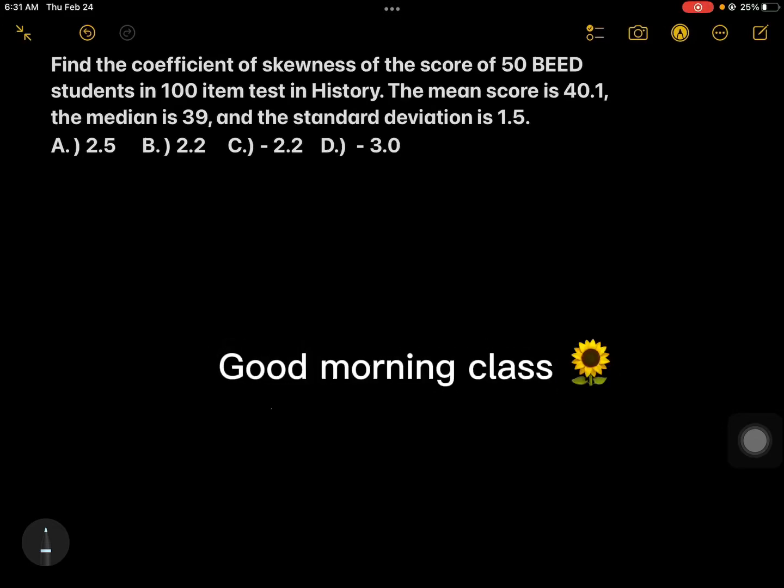Find the coefficient of skewness of the score of the 50 BEED students in 100 item tests in history. The mean score is 40.1, the median is 39, and the standard deviation is 1.5.